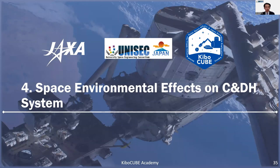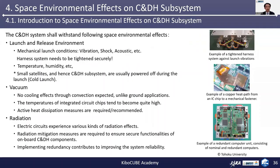The next chapter is space environmental effects on C&DH system. In general, gross attention shall be paid to the space environmental effects on the C&DH system. Firstly, consider the launch and release environment, including mechanical launch conditions such as vibration, shock, coasting, etc. For example, the harness system needs to be tightened securely — you need to know that the harness system could be a reason for system failure. Also consider temperature, humidity, etc. Small satellites and hence the C&DH subsystem are usually powered off during the launch, which is also called cold launch.